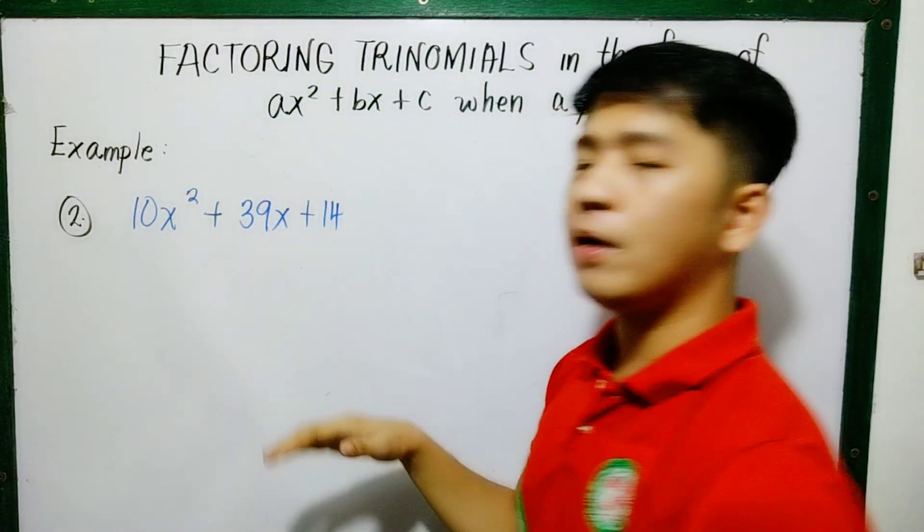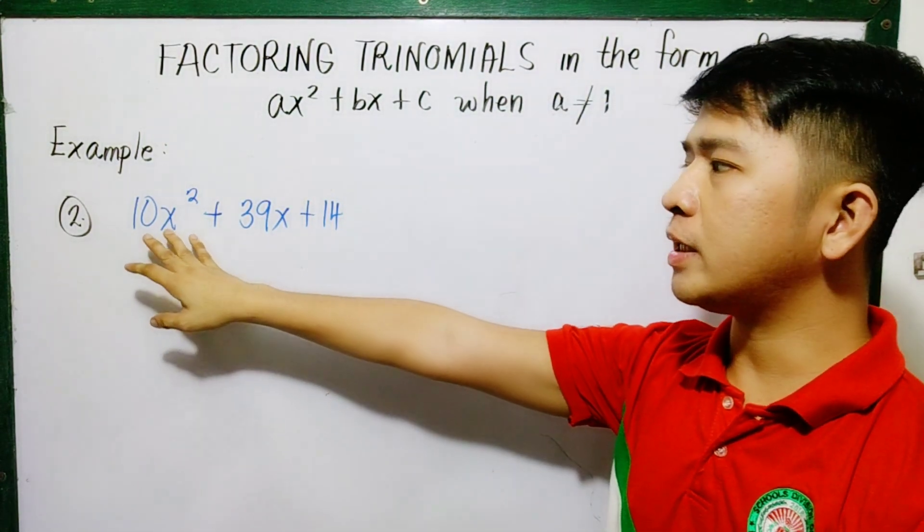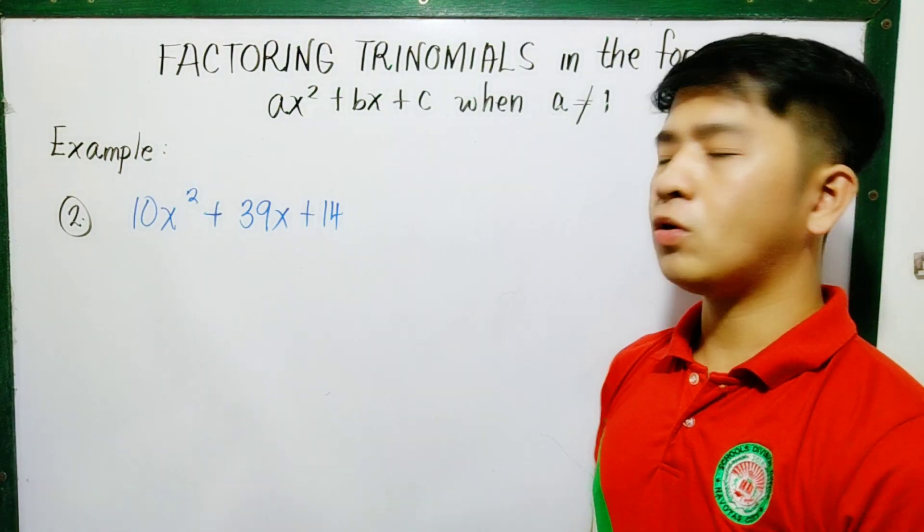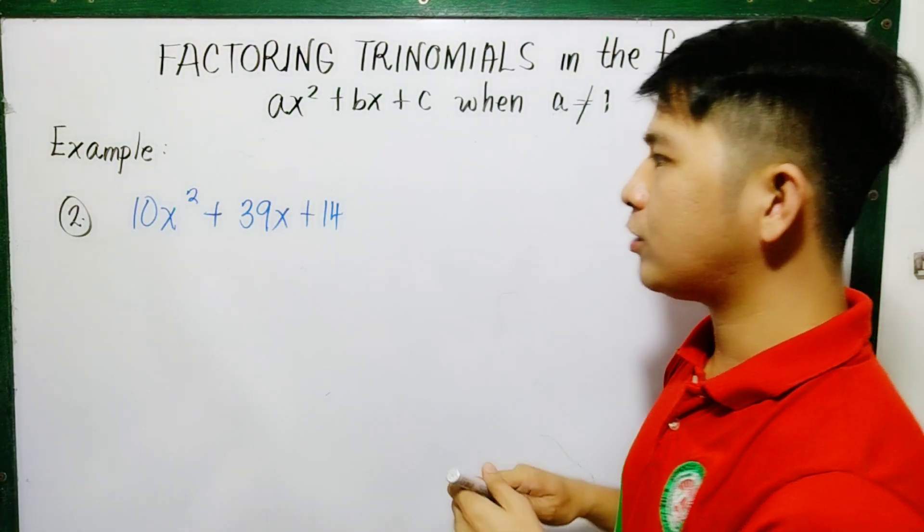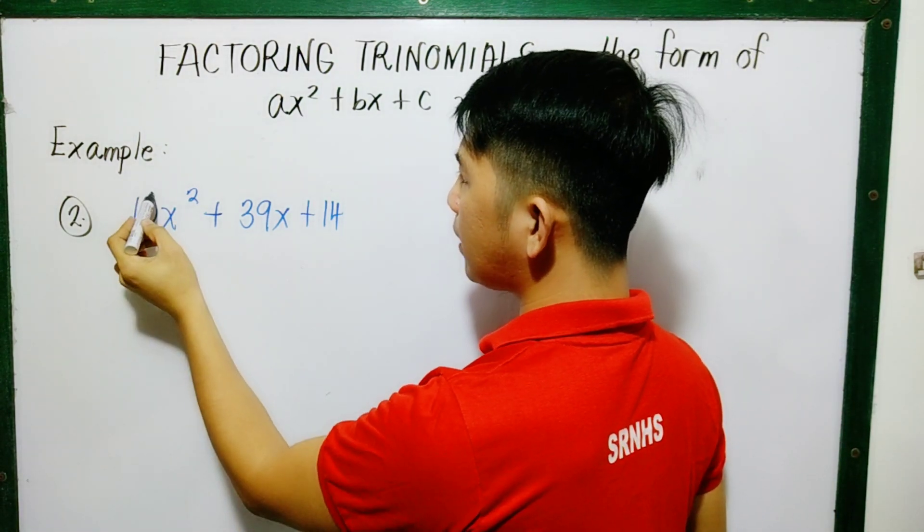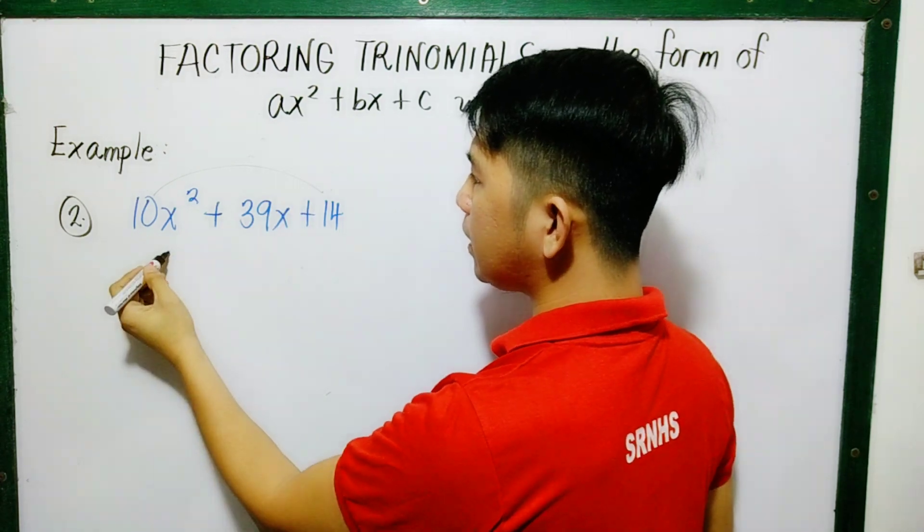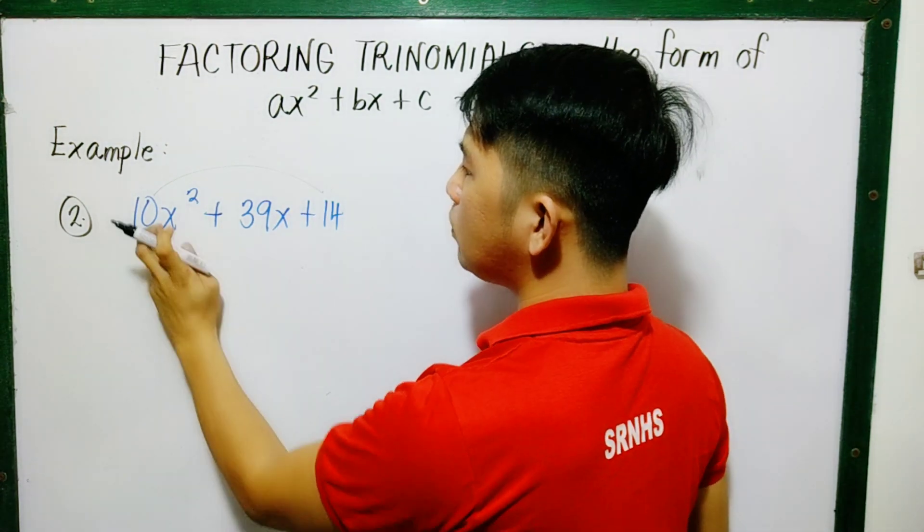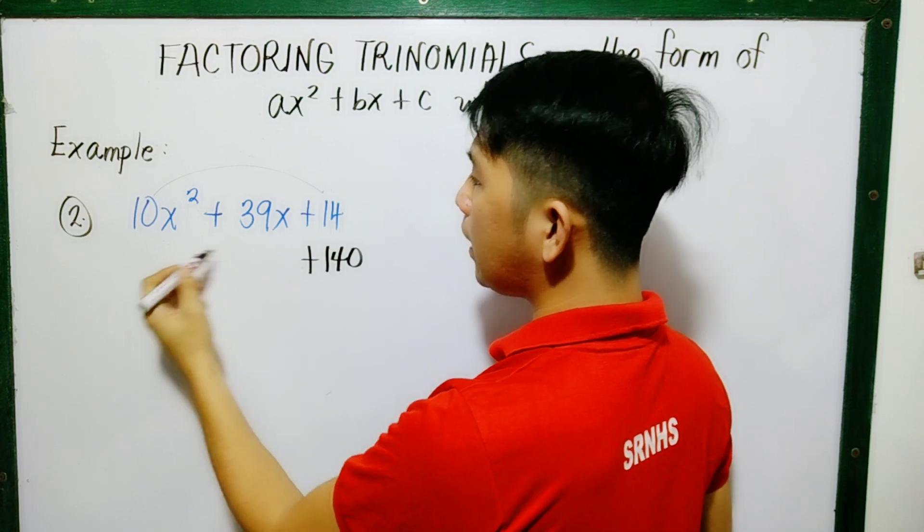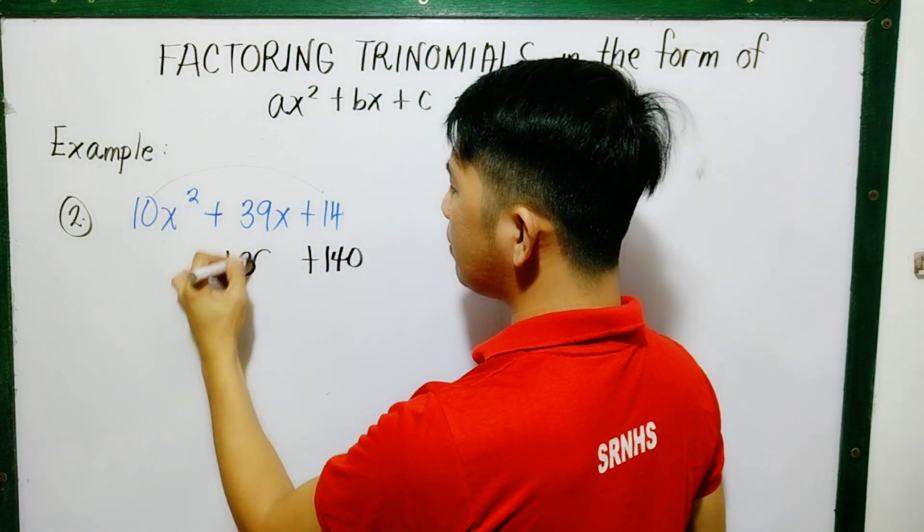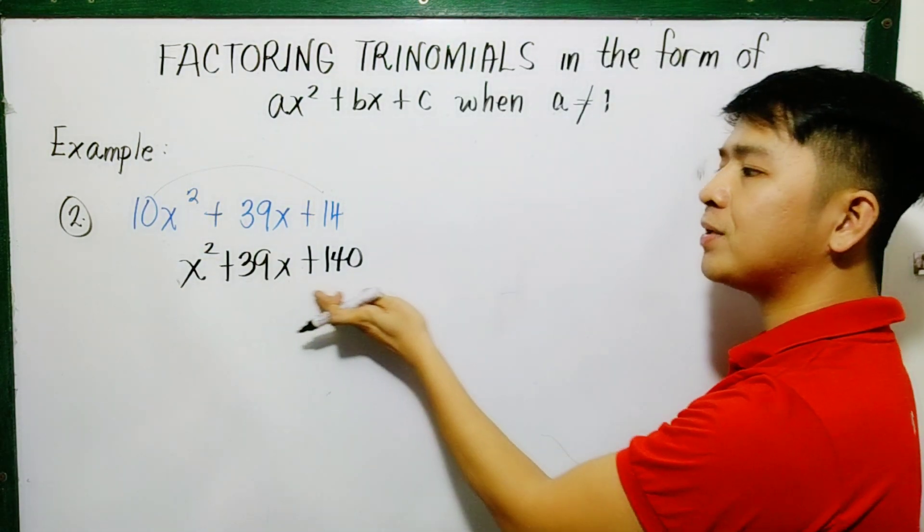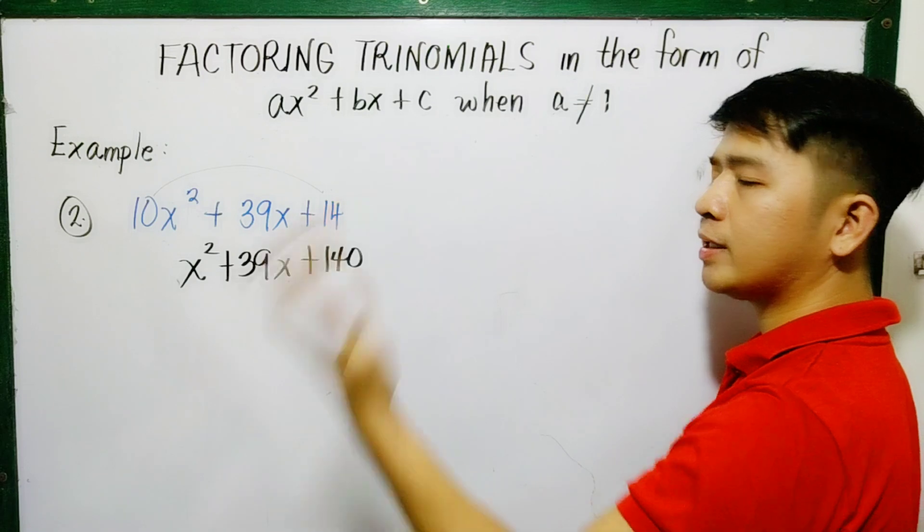Example number 2. We will factor 10x squared plus 39x plus 14. So let's do that method again. We'll remove the 10 but don't erase it. Multiply it here. So when you multiply it, it becomes 140. Then bring down 39x and the remaining x squared.